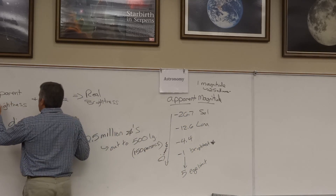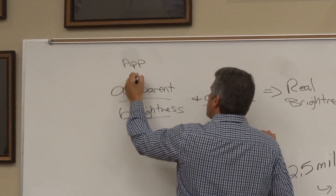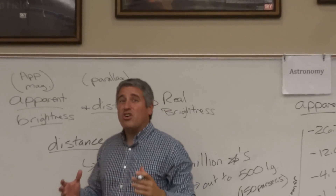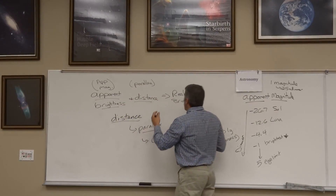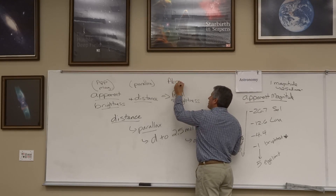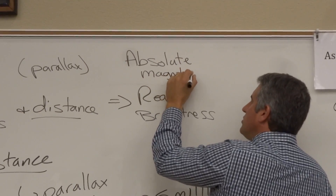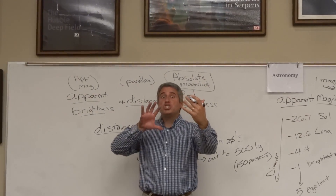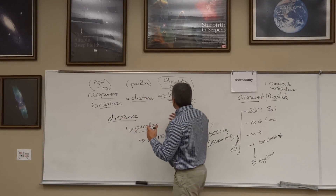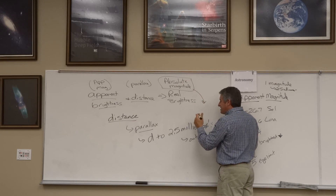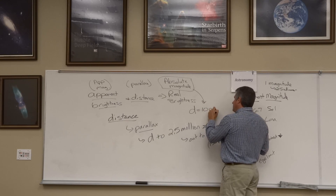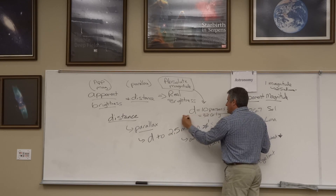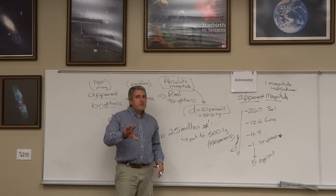So if we can measure a star's apparent brightness using apparent magnitude, and measure its distance using parallax, we can put those two things together and get a sense for how bright a star really is. To do that, we use what's called the absolute magnitude scale. The absolute magnitude of a star is its apparent magnitude adjusted for distance, so that everybody's on a level playing field. The absolute magnitude places every star at a set distance — that distance is 10 parsecs, or 32.6 light-years.